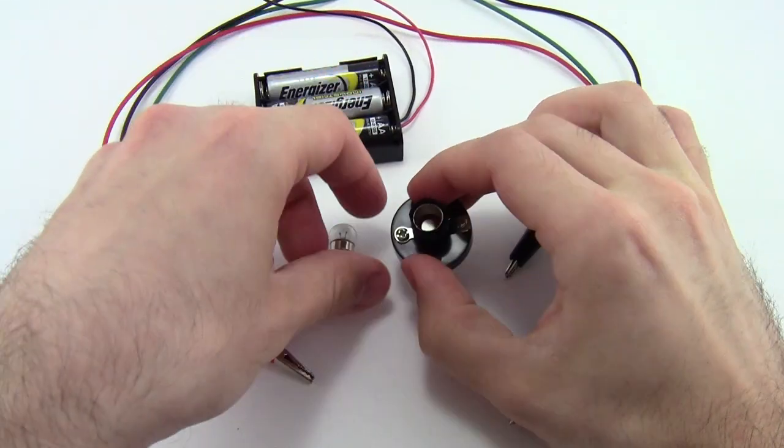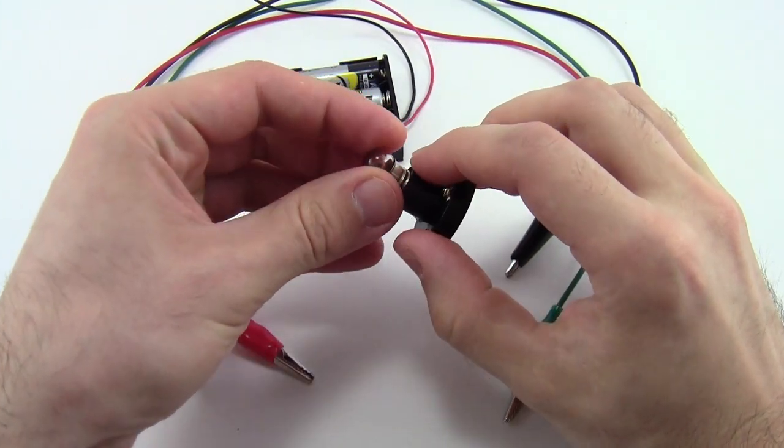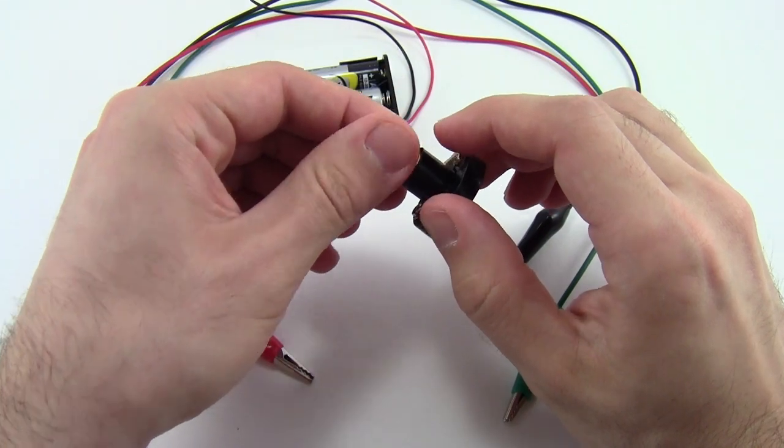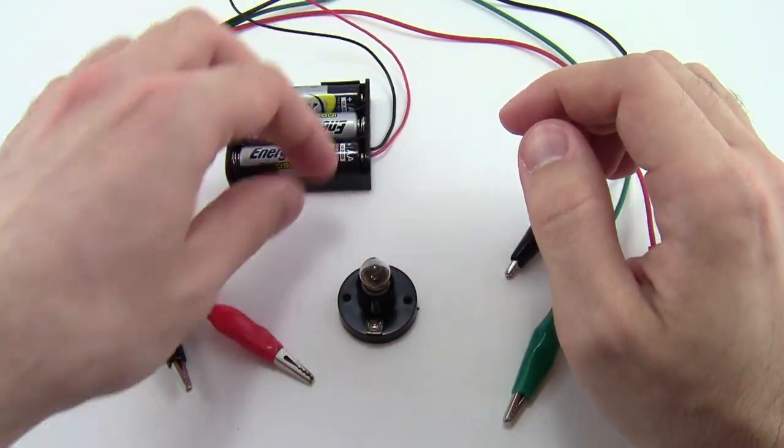Next, just screw the light bulb into the base, and now you are ready to connect everything with the alligator clips.